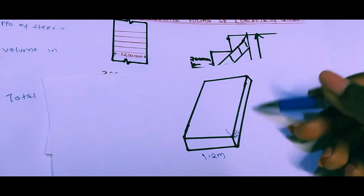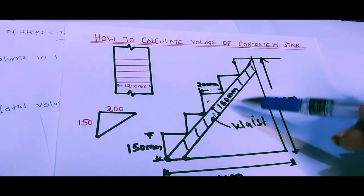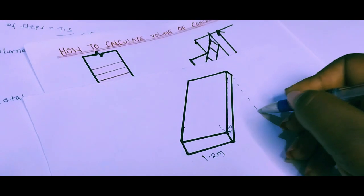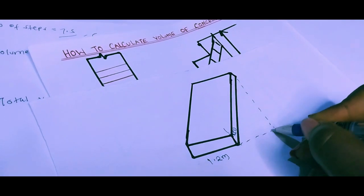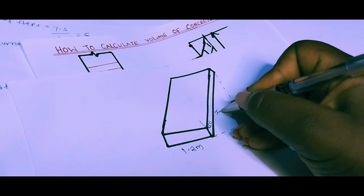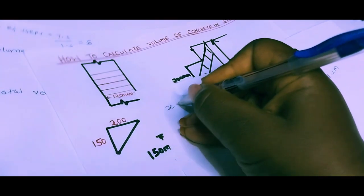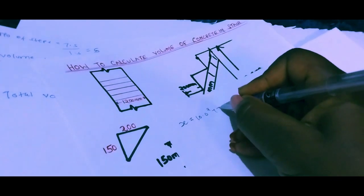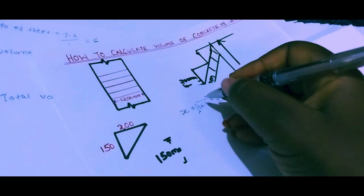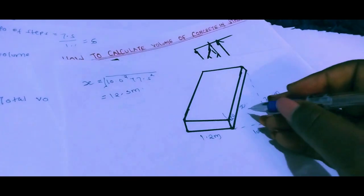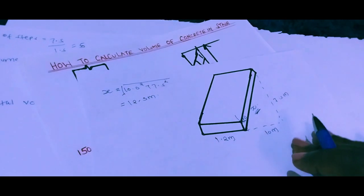The waist forms a sloped rectangle. To complete that rectangle, we use the horizontal length of 10 meters and the vertical height of 7.5 meters. Using the Pythagorean theorem, the waist length x = √(10.0² + 7.5²), which gives us x = 12.5 meters.